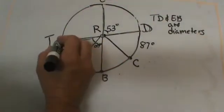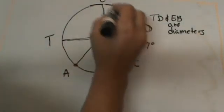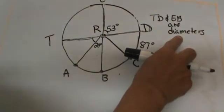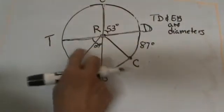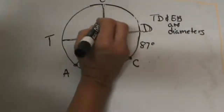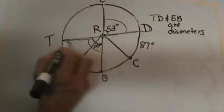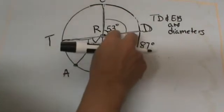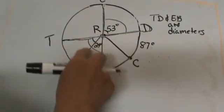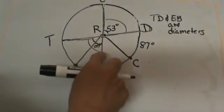If you will notice, TD and EB are both diameters. That means we have vertical angles here. This 53 degree angle is a vertical angle with angle TRB. If this side is 53, that means this larger angle over here must be 53.